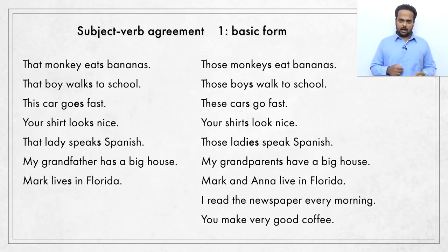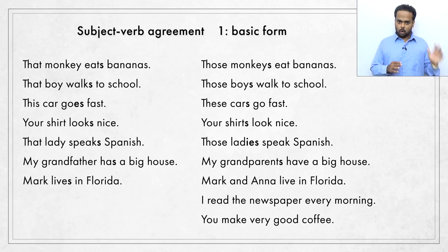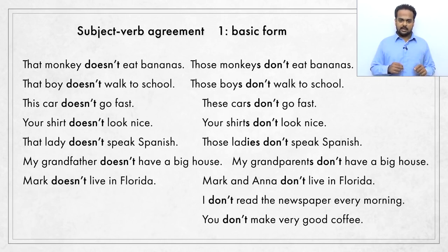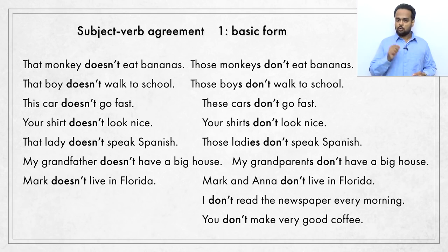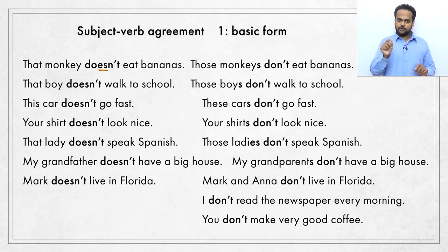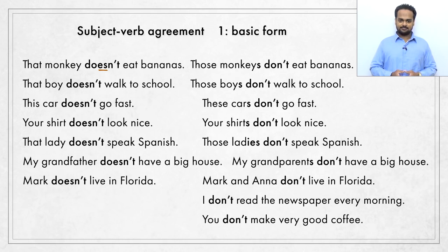Let's get back to the full sentences. The basic subject-verb agreement rule — singular verb for singular subject and plural verb for plural subject — also applies to negative forms. We say 'that monkey does not eat bananas' or 'doesn't eat bananas,' and 'those monkeys do not' or 'don't eat bananas.' It's important to note that we say 'does not' and then 'eat' — not 'does not eats' — because the S is already added to the helping verb do, so there's no need to add it again to the main verb eat.